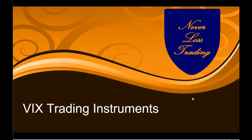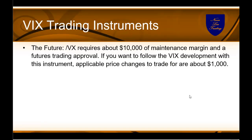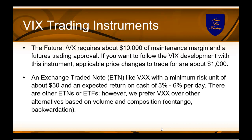Before we analyze the charts together, let us specify the best trading instruments for retail traders in volatility. The first instrument is the VIX future (ticker: VX). It requires about $10,000 of maintenance margin to keep a position open overnight and usually requires futures trading approval. Applicable price changes at the time of this recording are about $1,000 per trade in risk or reward. For operating with a lower risk unit, you can trade the VXX, which has a minimum risk per share of about $30 but allows an expected return on cash of 3–6% per day — which is exceptionally high. There are other ETNs or ETFs that follow the VIX or volatility.